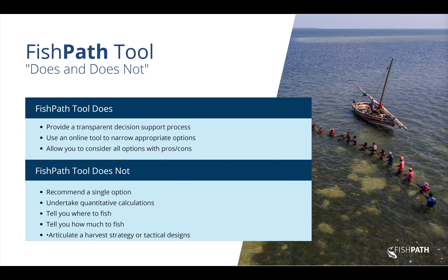It's also important to recognize what the FishPath tool can't do and to talk about its limitations. You might think the tool is going to spit out one ideal option — that's not really the case. It's there to help guide the discussion and provide a list of options with criteria as to whether those options are feasible given the information you have for your particular fishery. It's not recommending a specific option or telling you how to fish; it's mainly there to help guide the discussion.